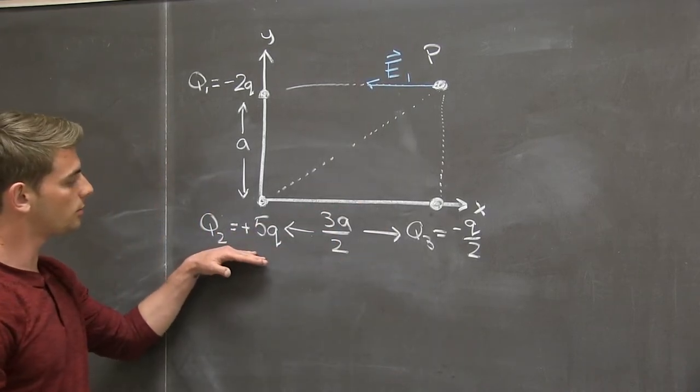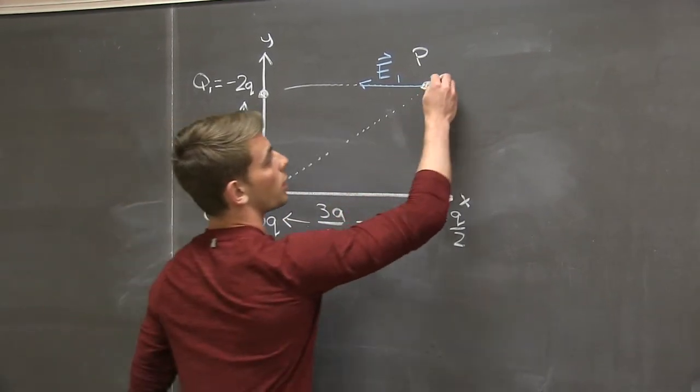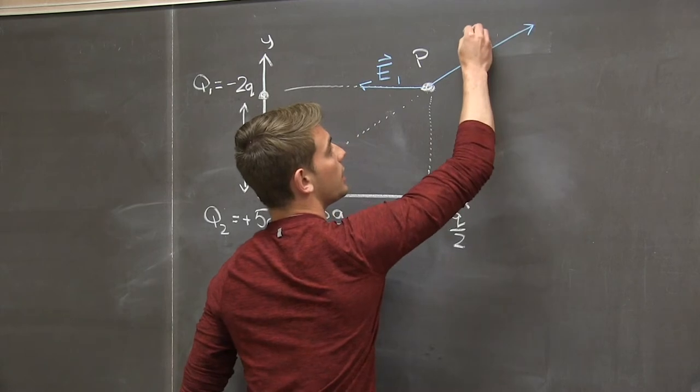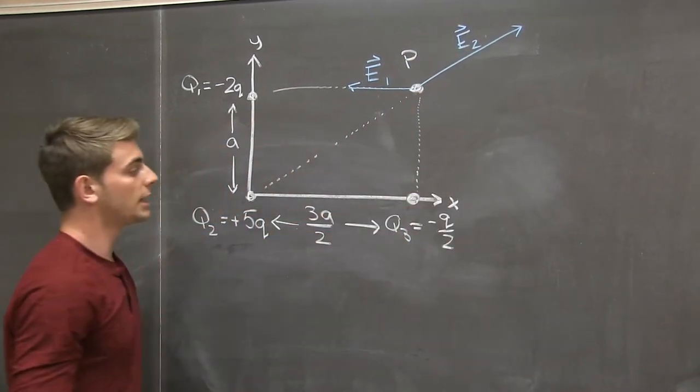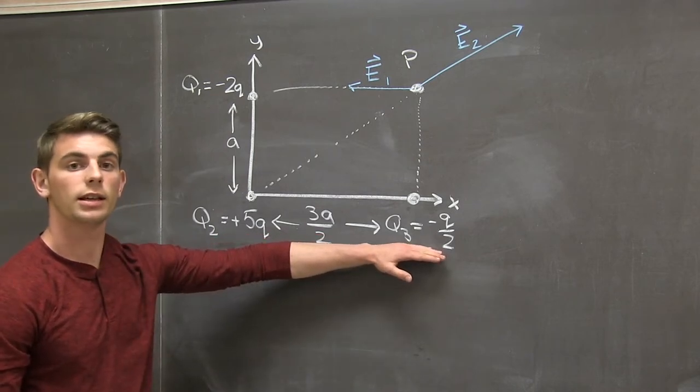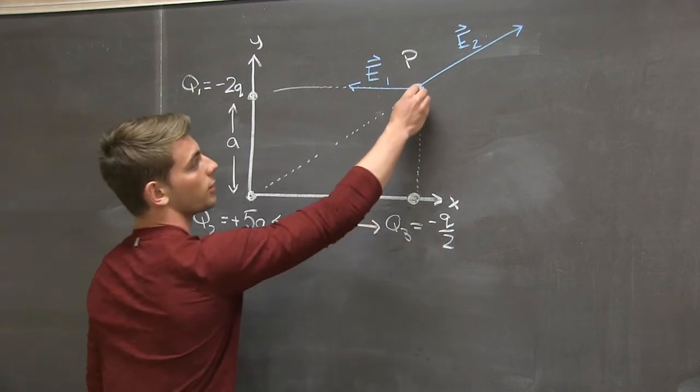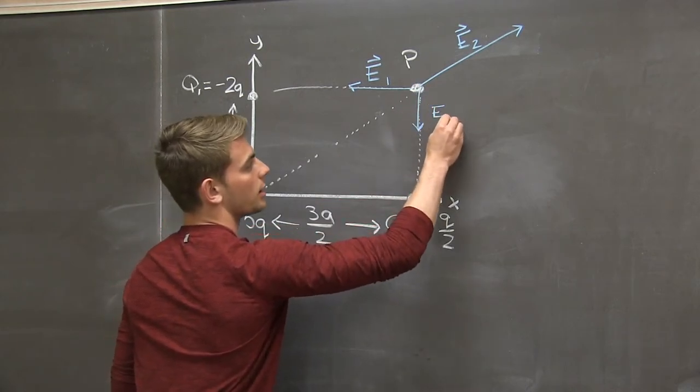Now q2 is a positive charge, and those electric field lines point away. So we know that e2 is like so. And lastly, using that same knowledge, we know that q3 is negative. This implies that the electric field for q3, e3, is going to be vertically downward.